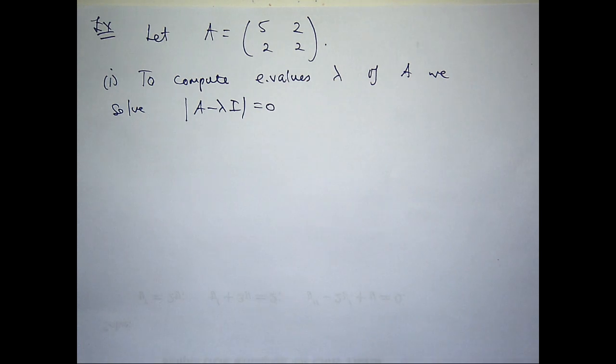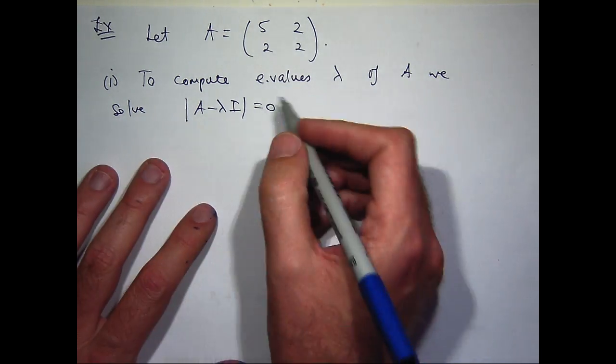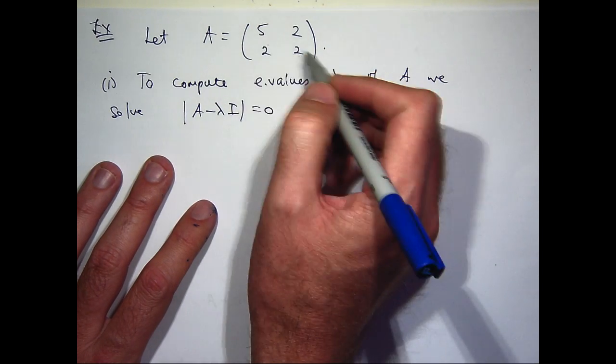We consider the matrix A minus lambda I, where I is the identity matrix. And then we want to set its determinant equal to zero and find the values of lambda that satisfy, that make the determinant of A minus lambda I equals zero. So by these two vertical lines I mean the determinant. So let's think about A minus lambda I.